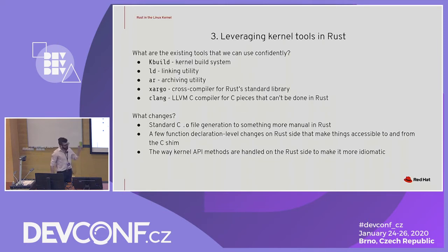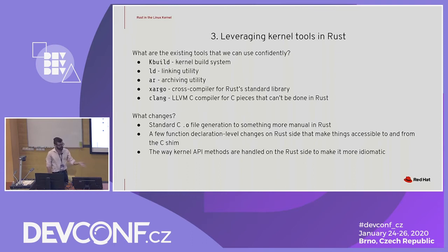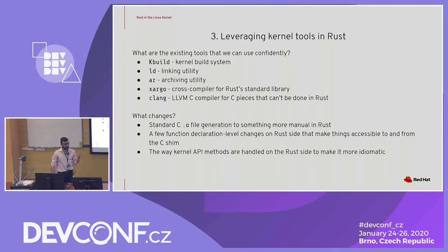How did I do this? I leveraged a lot of existing tooling for the kernel. Here is a list of basically all of the tools you'll need for this. The most important one really is Kbuild because that is the native system for the kernel builds. We're actually able to leverage that because of Rust's C ABI compatibility to offload a lot of this.